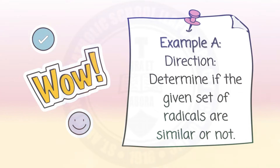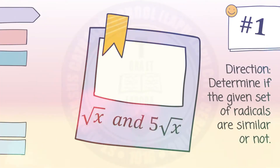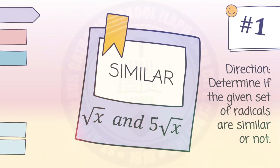Let's have some examples. Direction: determine if the given set of radicals are similar or not. Number one: square root of x and five square root of x. These two radicals are similar since both have the same index, which is two, and the same radicand, which is x. That makes them similar.